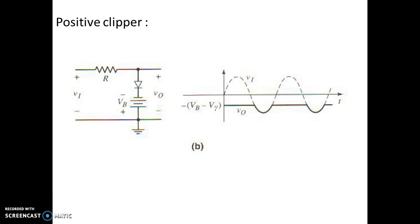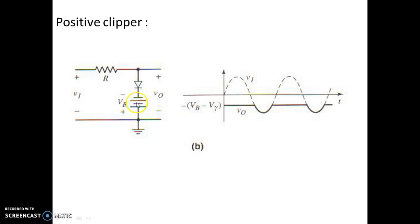We will see how this positive clipper works. During the positive half cycle of the input signal, the anode of the diode remains positive and the cathode remains negative — that is, the diode is reverse biased — so the circuit completes through this loop. The resistance of this path is very low, so we get no output.